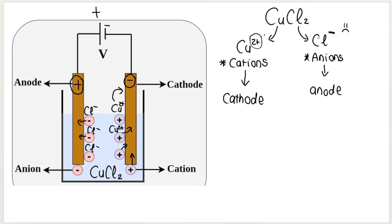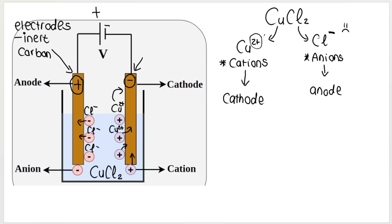It is important to note that the electrodes themselves — these metal pieces — are made up of an inert metal. Inert means they are unreactive; they don't react. Generally, the electrodes are made up of carbon or graphite. Both electrodes are inert. Then electrolysis — this process — is where the ions get attracted to the electrodes and reduction and oxidation occur. That's called electrolysis.